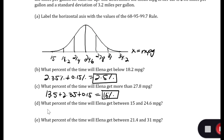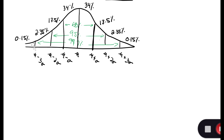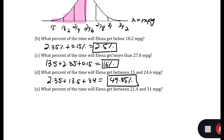What percent of the time will Elena get between 15 and 24.6 miles per gallon? That's from three standard deviations below the mean up to the mean. So we have 2.35 plus 13.5 plus 34, which equals 49.85%. Another way: that's half of 99.7%, and 99.7 divided by 2 is 49.85.